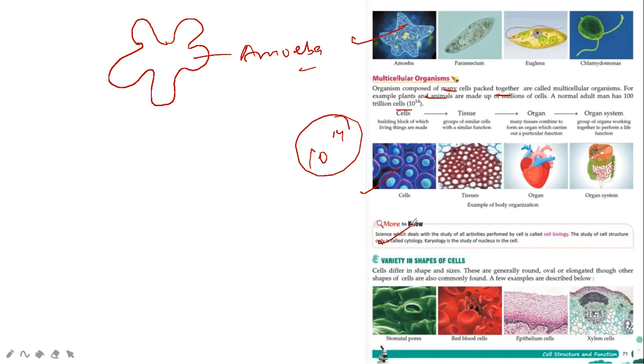Science which deals with the study of all activities performed by the cell is called cell biology. The study of cell structure only is called cytology. And karyology is the study of nucleus.